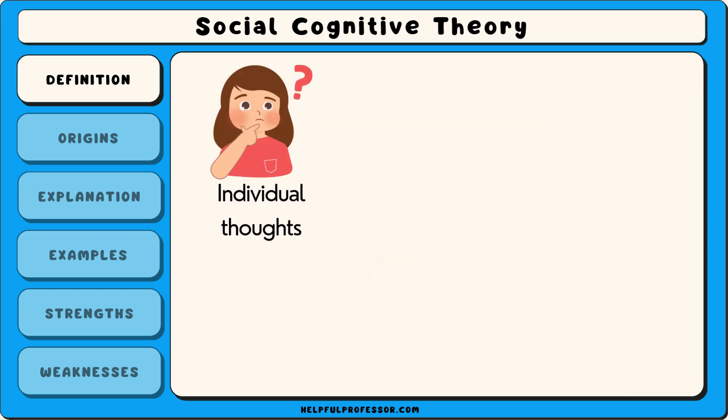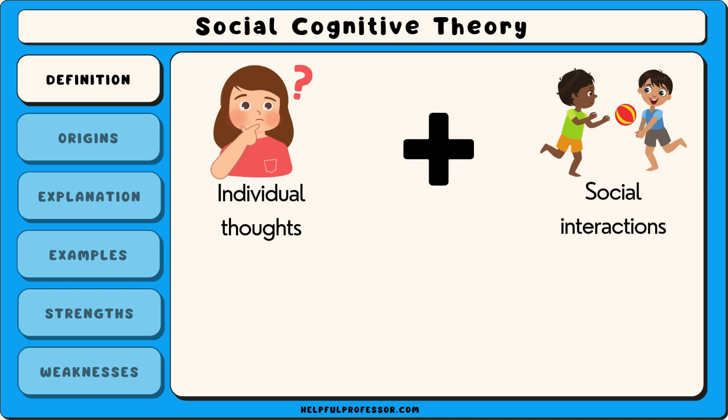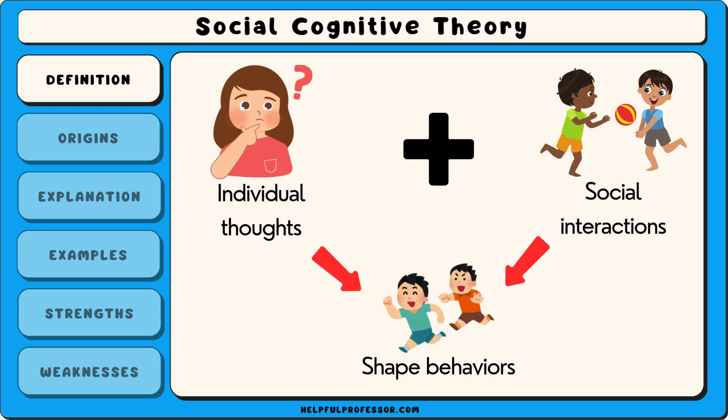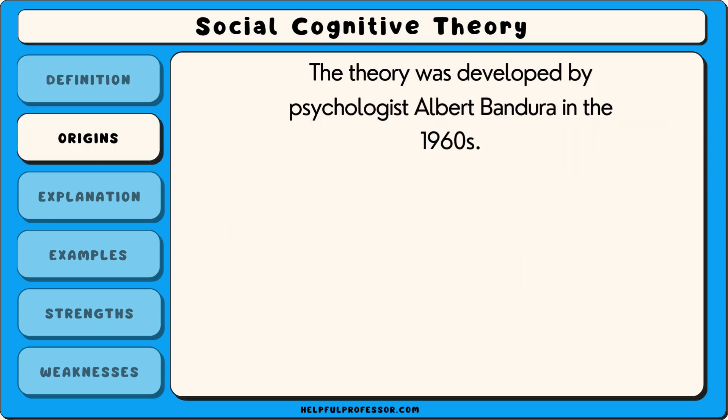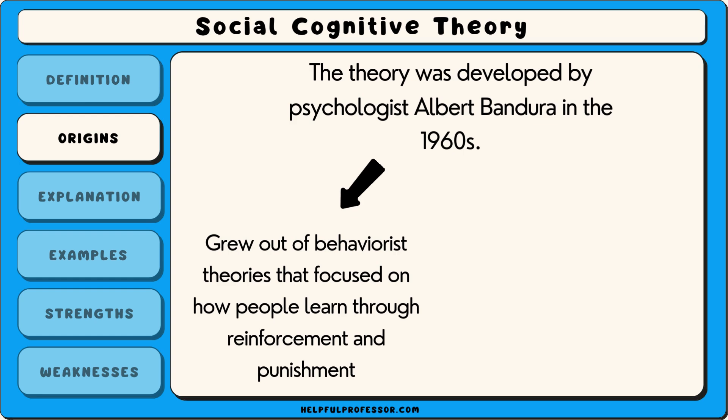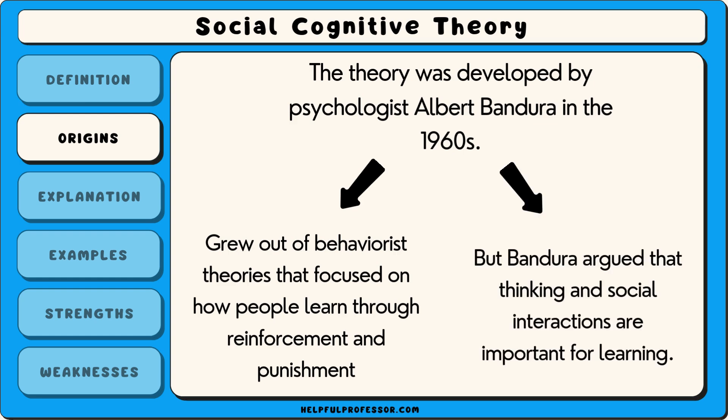This theory highlights the importance of both individual thoughts and social interactions in shaping behaviours. The theory was developed by psychologist Albert Bandura in the 1960s. It originally grew out of earlier behaviourist theories that focused on how people learn through reinforcement and punishment. However, Bandura believed that this view was too limited as it ignored the role of thinking and social interactions in learning.